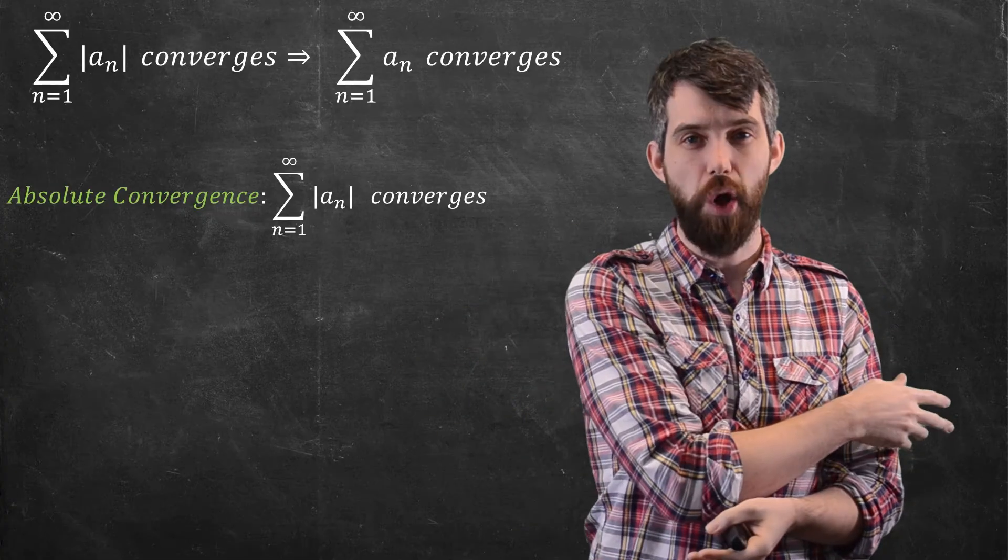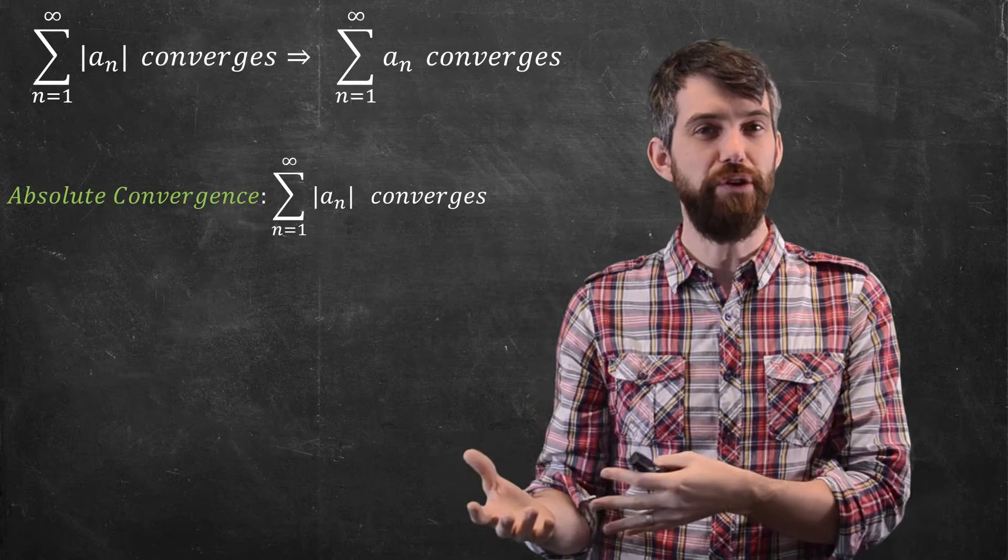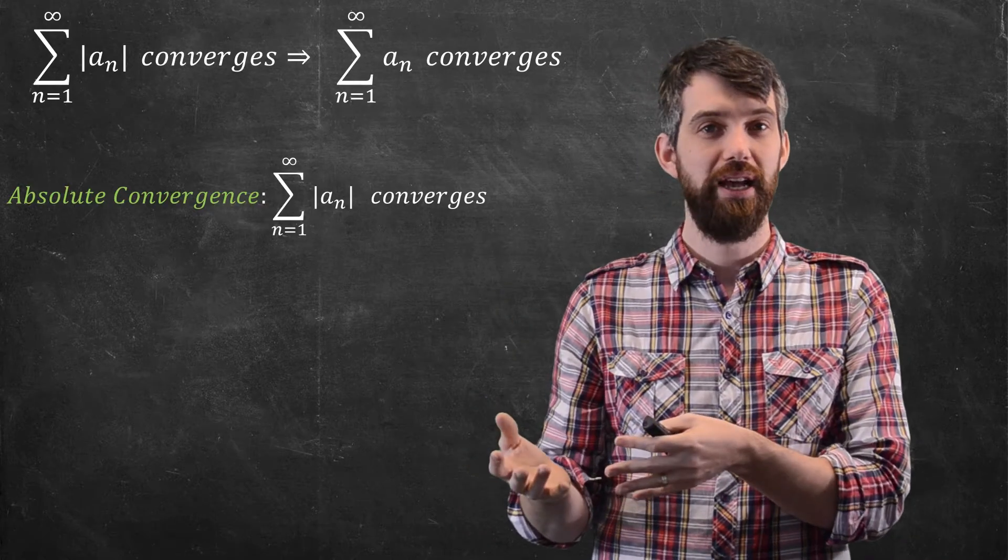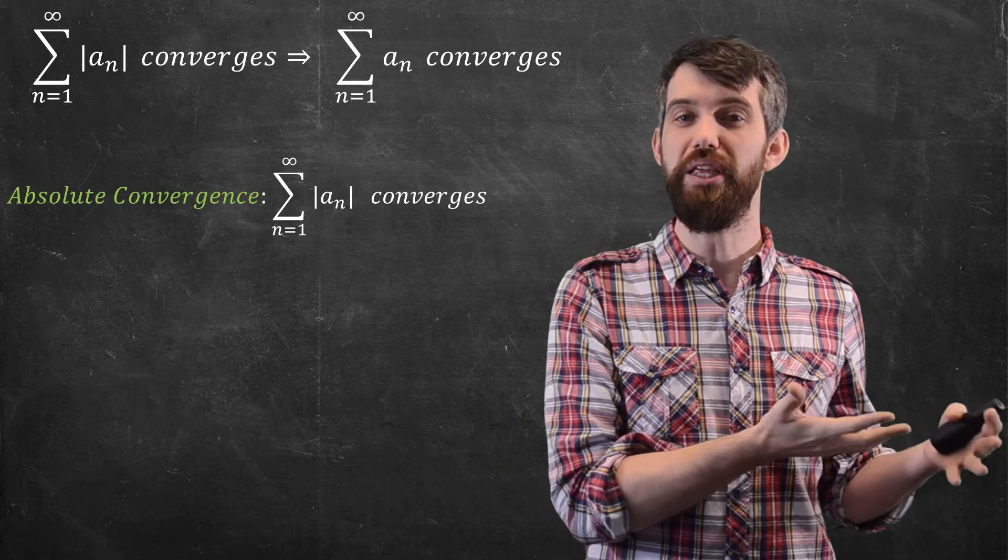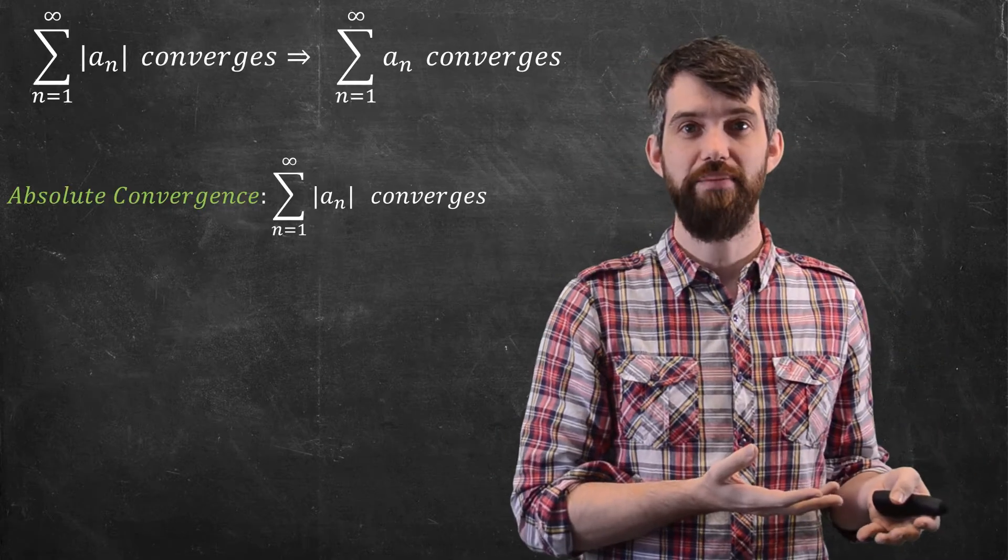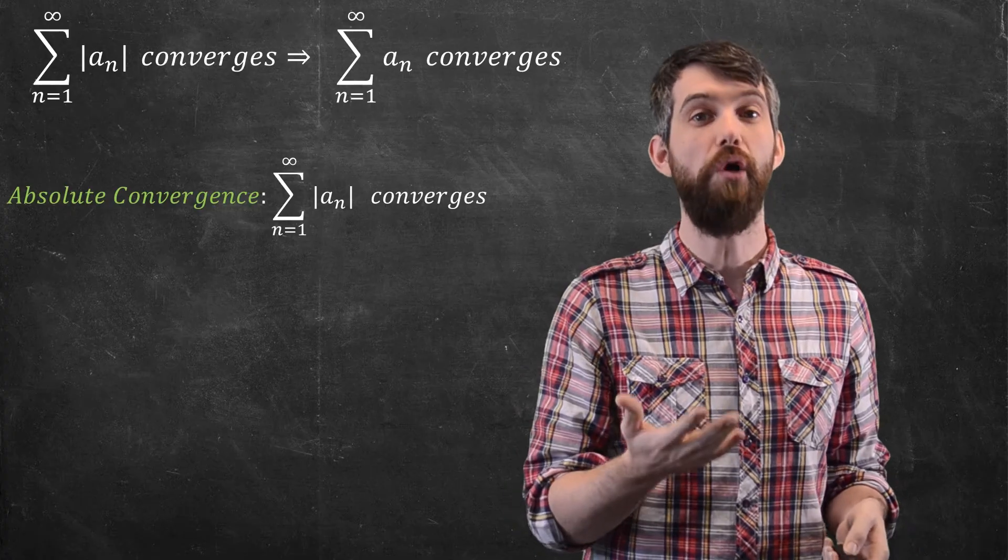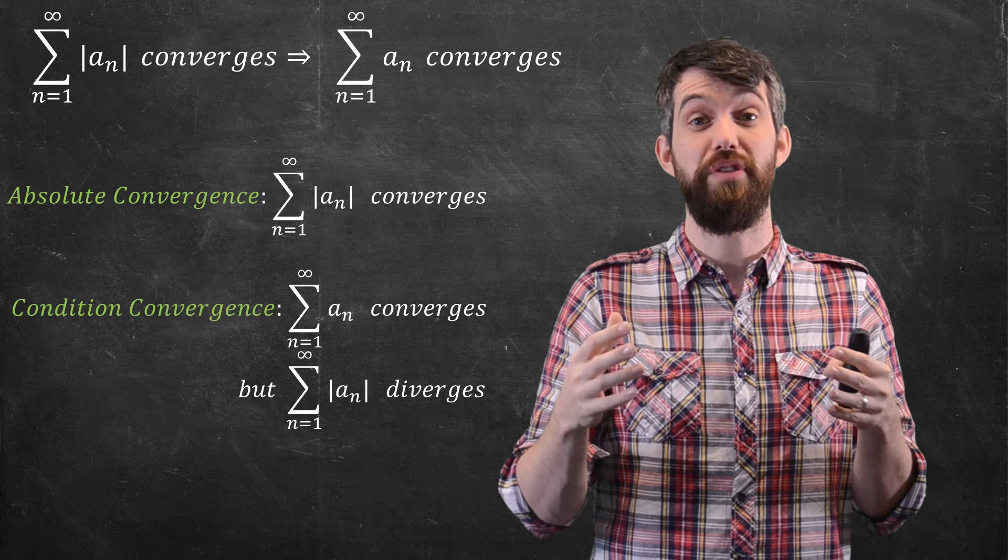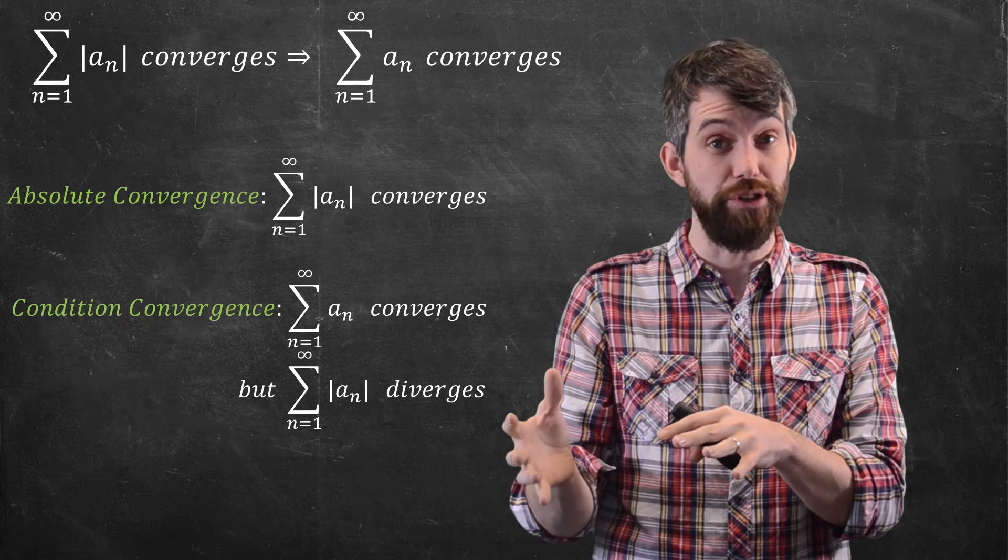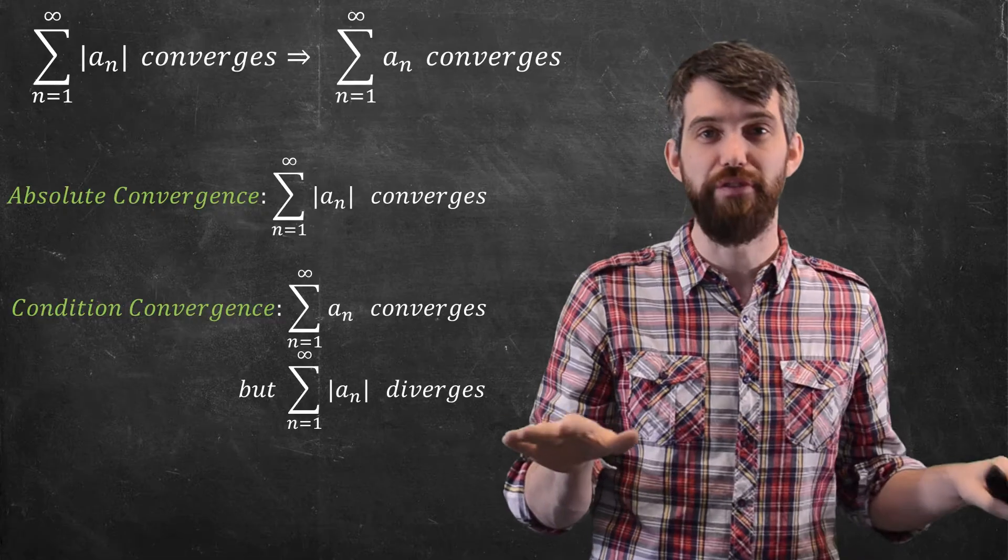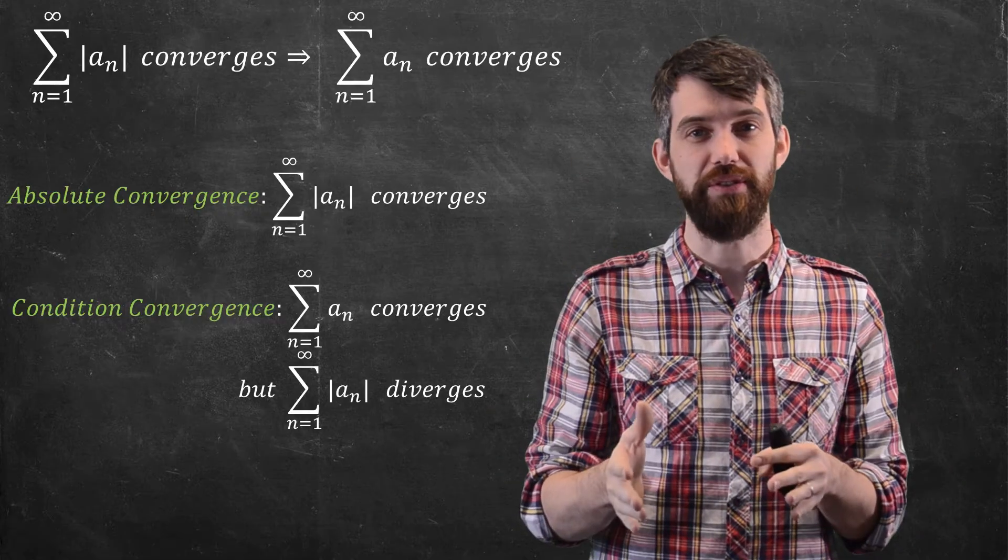But the other direction is not true. If something converges, like in the example we saw before that converged by the alternating series test, it does not necessarily converge absolutely. It might, but it might not. And in that scenario where it doesn't, we call this conditional convergence. So conditional convergence is where the original series converges, but does not converge absolutely. It doesn't converge when you wrap it in absolute value signs.